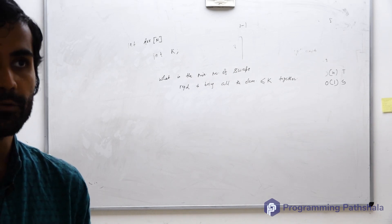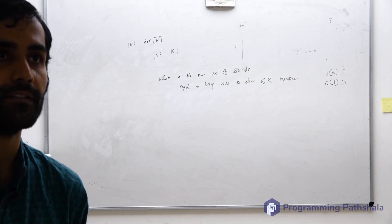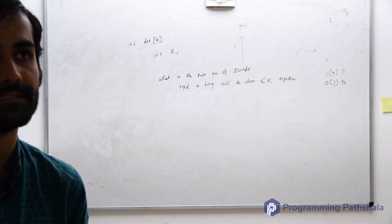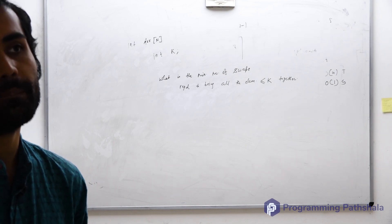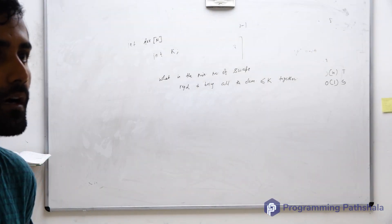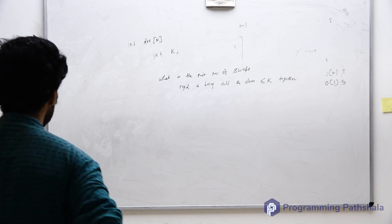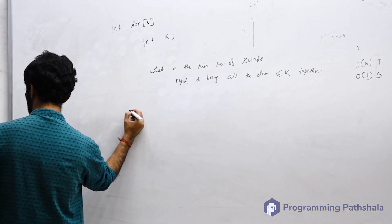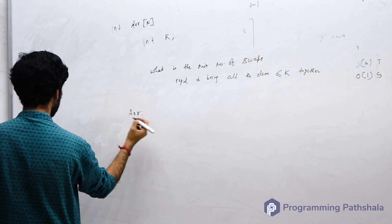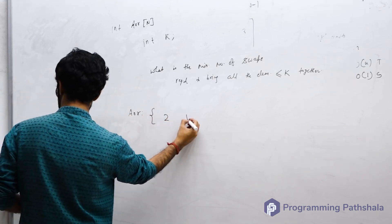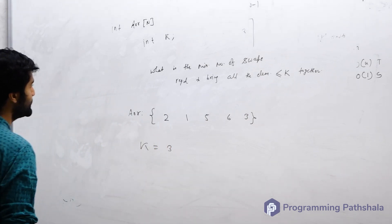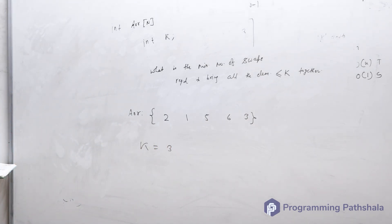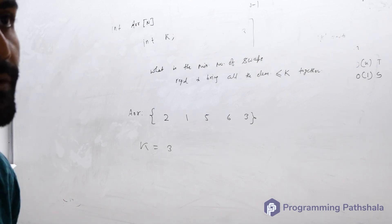A swap means changing element at index i with element at index j where i and j are different indices. You can swap anything with anything. Sample test case: the array contains elements 2, 1, 5, 6, 3 and the value of k equals 3. What is the minimum number of swaps to bring all elements lesser than or equal to 3 together?